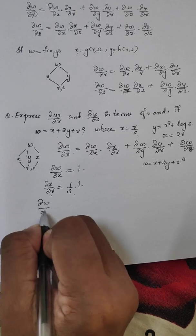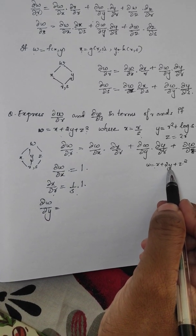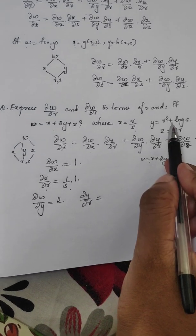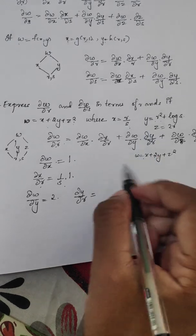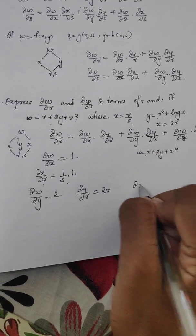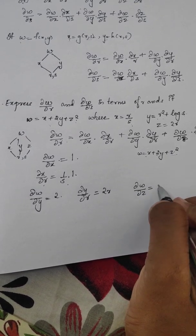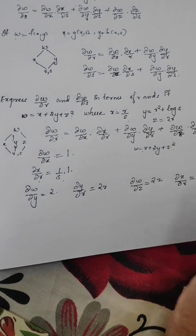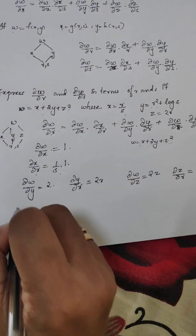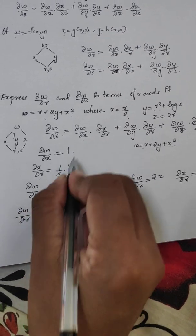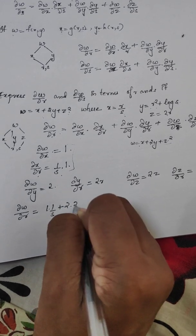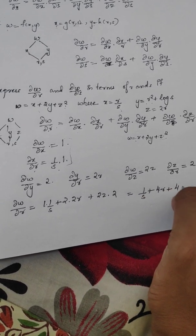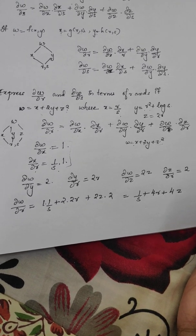Now ∂w/∂y: since w equals 2y, the derivative is 2. Then ∂y/∂r: with s constant, the derivative with respect to r gives 2r, so this term contributes 4r. Then ∂w/∂z: since w involves 2z, the derivative is 2z, and ∂z/∂r gives 2r.